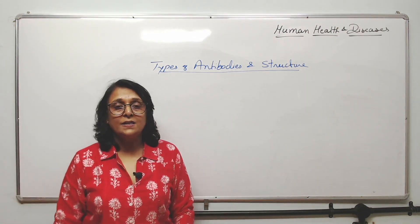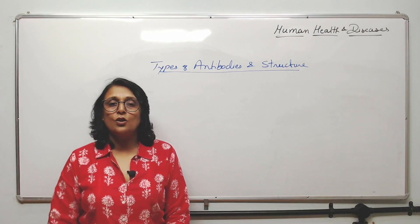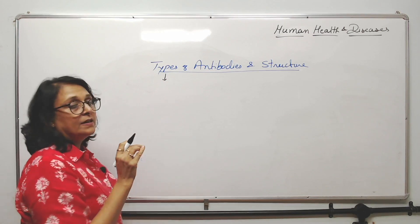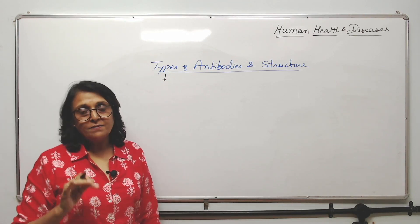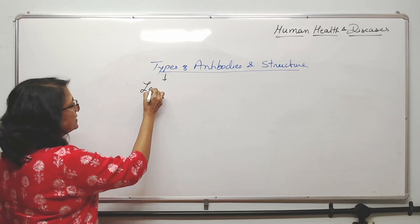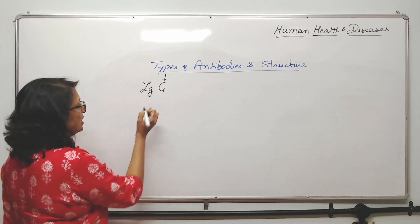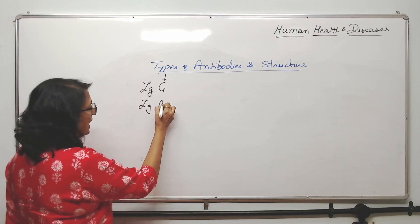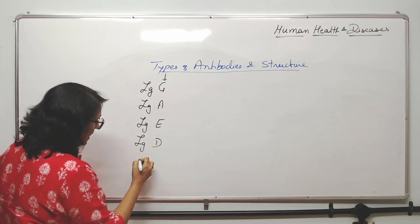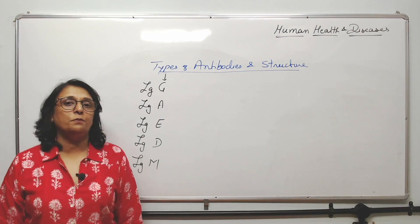Let us try to understand the types of antibodies and the structure of a typical antibody. There are five important antibodies, written as Ig — immunoglobulins: IgG, IgA, IgE, IgD, and IgM.